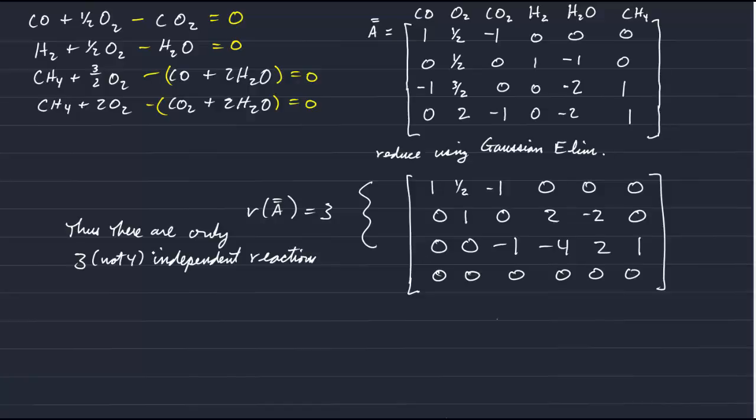So there are only 3 independent reactions. And those 3 independent reactions are CO plus one-half O2 minus a CO2 is equal to 0. We have O2 plus 2H2 minus H2O is equal to 0. And then the last row here represents, actually we have a CH4 plus 2H2Os minus CO2 minus 4H2.